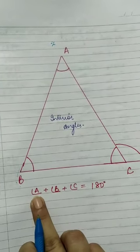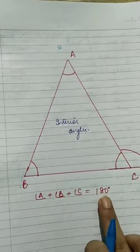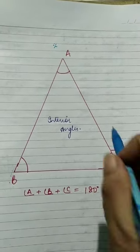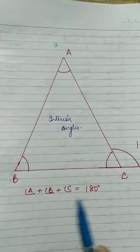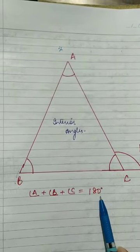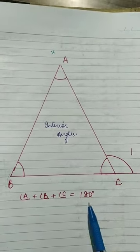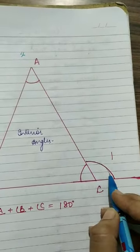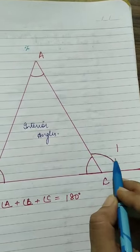The sum of the interior angles - angle A plus angle B plus angle C - is always equal to 180 degrees. Whenever you add these angles, the sum will be 180 degrees. Keep this in mind, it is very important.